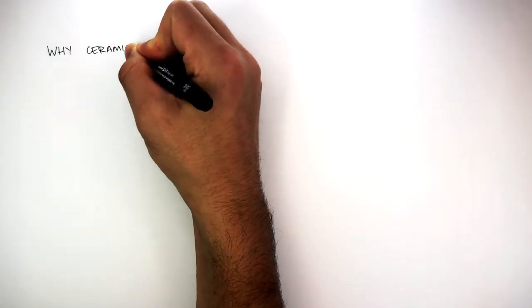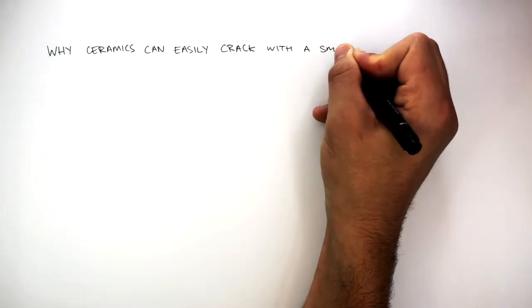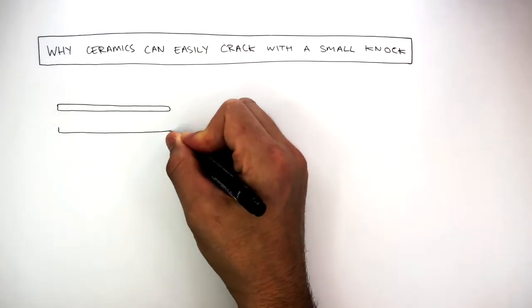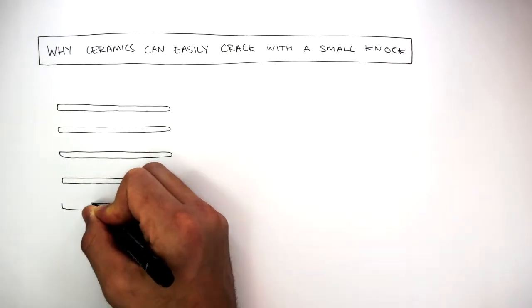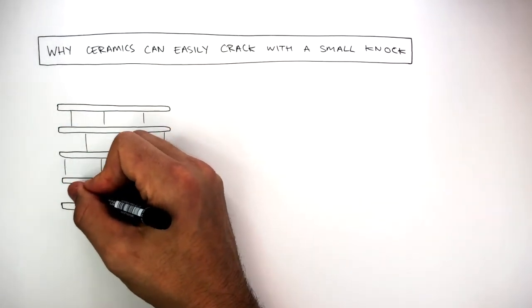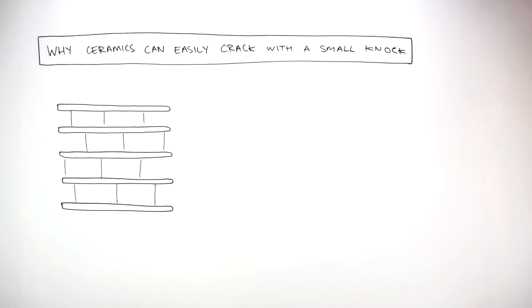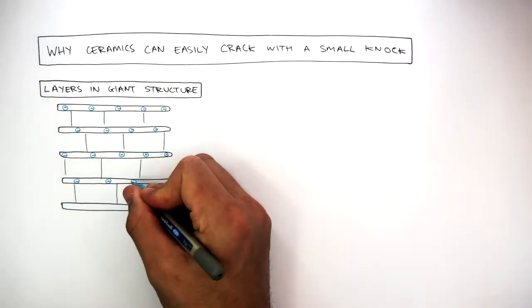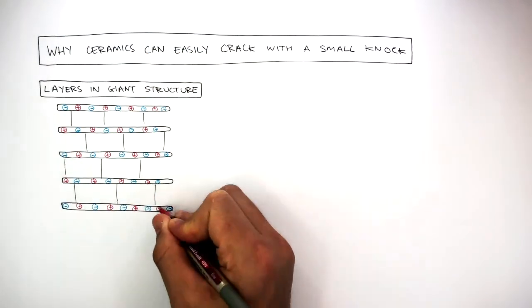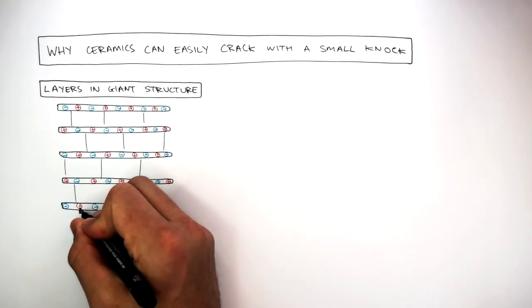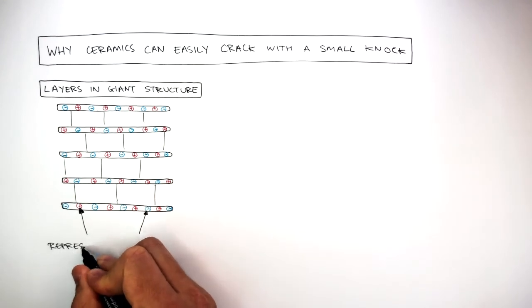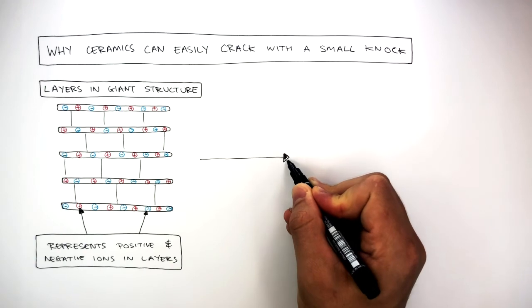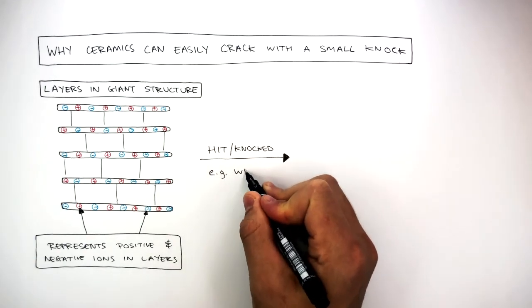Why is it ceramics can easily crack with a small knock? Here the layers of clay in ceramics have strong covalent bonds holding them together. These layers in the giant structure contain negatively and positively charged ions. If a ceramic is hit or knocked, for example with a hammer like this vase, it easily cracks.